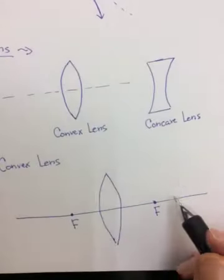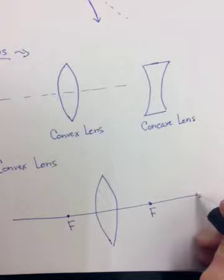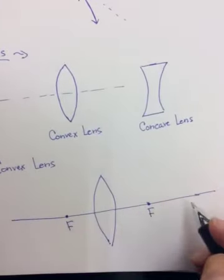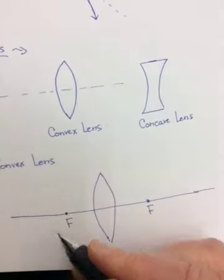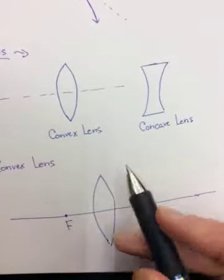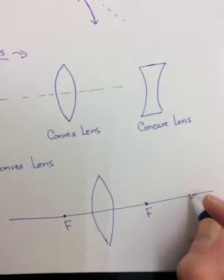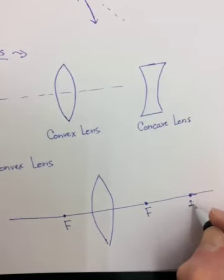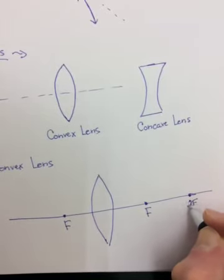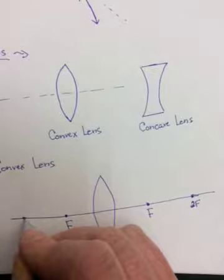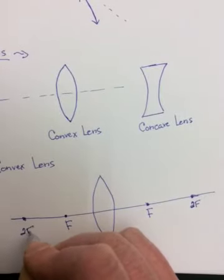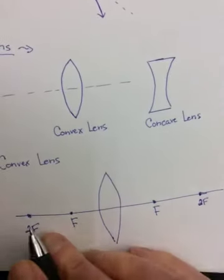Normally we would say they also have a C like mirrors did on each side, which would be twice F, but because it's not clear that there's actually a sphere here, instead of calling that point C, we now call it 2F. But you might be able to intuit that it's the same point.